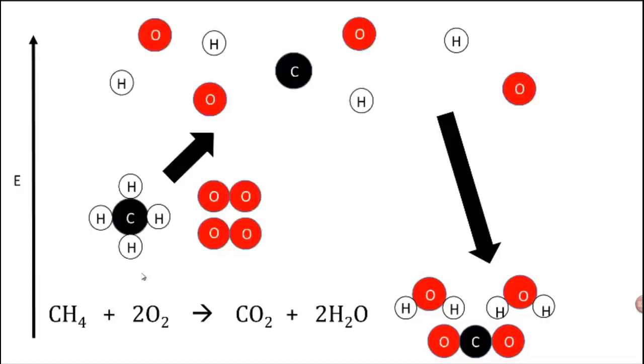If we look at the entire reaction overall, we can see why the combustion of methane, which is just the burning of natural gas, is an exothermic reaction and releases energy. We can see that starting with our reactants, they're in a higher energy state than our products, which means that overall energy will be released because we're going from a higher energy state to a lower energy state as the reaction proceeds.